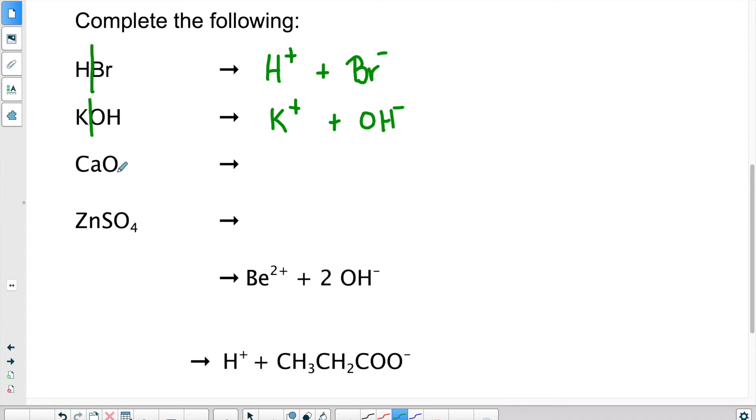Then I have CaO, metal, nonmetal. So I have a salt. So my salt will split between the metallic part and the nonmetallic part. So Ca will be my first ion and O will be my second ion. Ca is in column number two, so it will carry a charge of plus two. Oxygen, group number six, will have a charge of negative two.